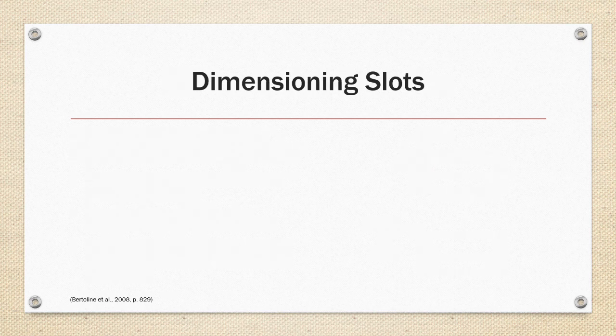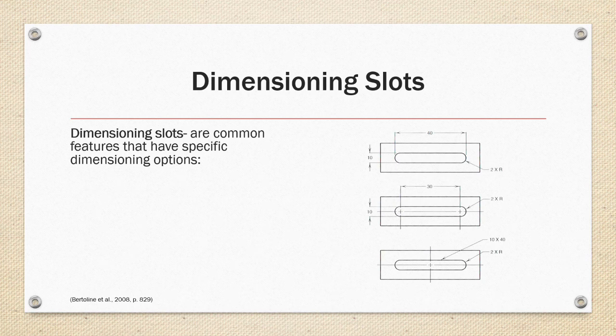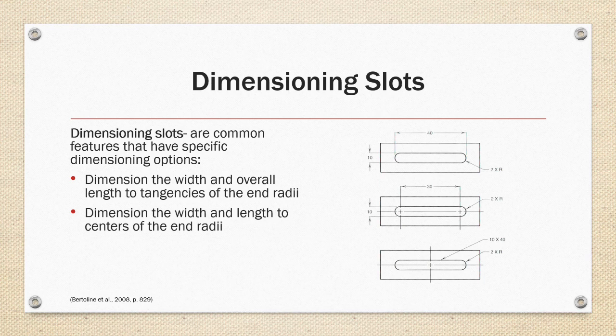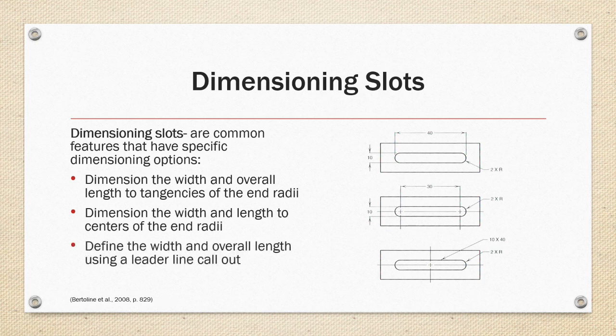Dimensioning slots. Slots are common features and have some specific dimensioning options to choose from including dimensioning the width and overall height to the tangencies of the end of the radii as shown in the first example on the right or dimensioning the width and length to the centers of the end of the radiuses as shown on the second example on the right or define the width and overall length using leader line callout as shown in the last example on the right. Note with all three schemes the radii that terminate the ends of the slot need to have a note denoting that it is a radius or it is left up to the interpretation of the tradesperson to decide the shape to make.